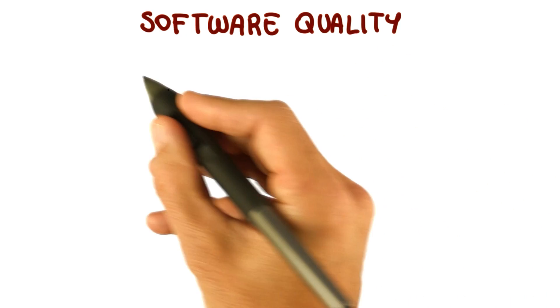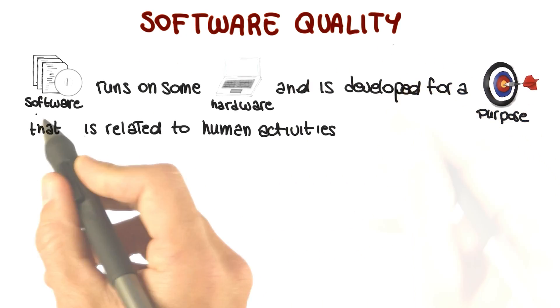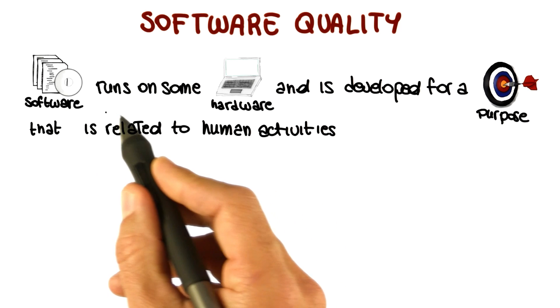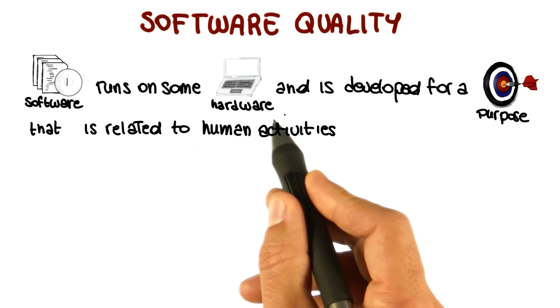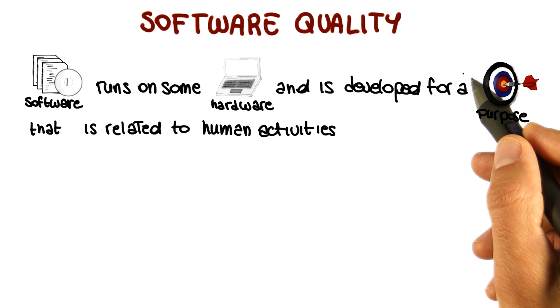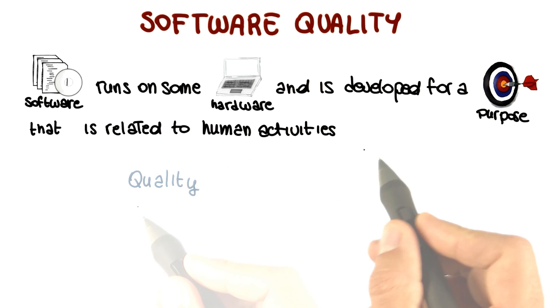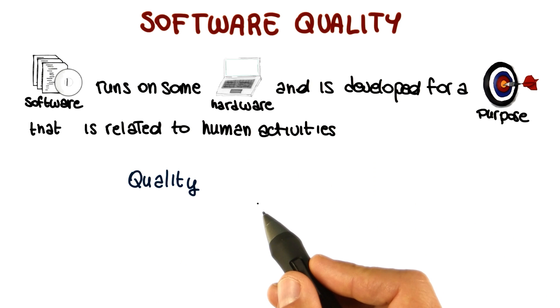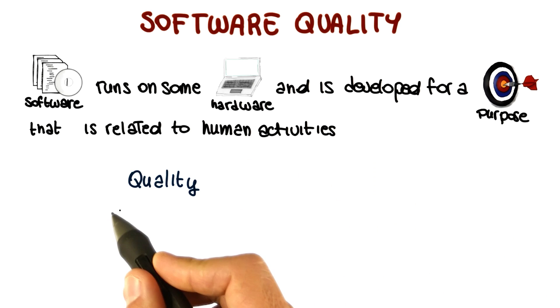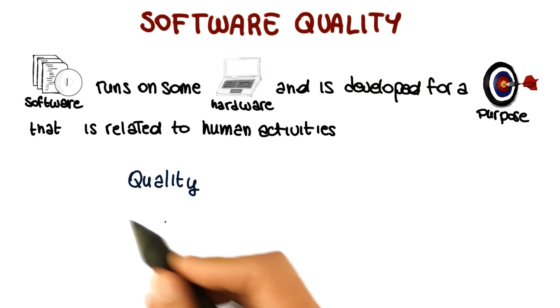Let's see how this affects the concept of software quality. Another way to express what we just said is that the software runs on some hardware and is developed for a purpose that is related to human activities. Given this perspective, we can define what we mean by software quality in this light.